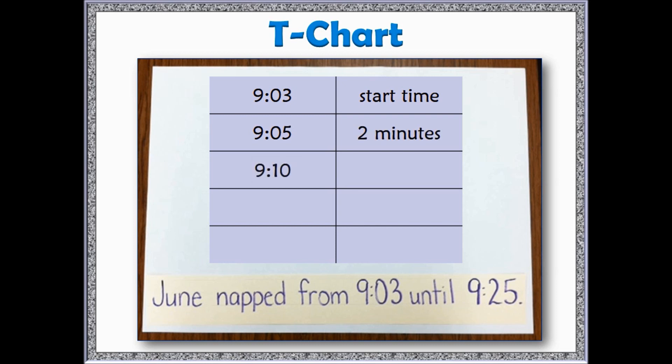So I start by doing a 2 minute jump, then a 5 minute jump. Now I'm going to do a 10 minute jump. And then I'm going to do one more 5 minute jump until I get to the end of the nap. Now, on the right side, I will add up all of those times. And again, I will find that June's nap lasted 22 minutes.